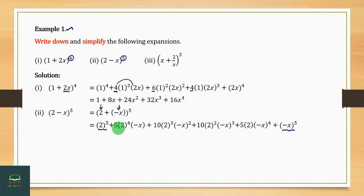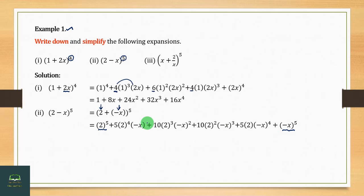Then we have to use 2×5, which is 1×5, then 5×1. Then 2×5, 2×4, 2×3, 2×2, 2×1. Then we have to use 2×5 minus 2×5, 2×2, 2×2, 2×3, 2×4. Then we have to use 2×5, which is 5×5.